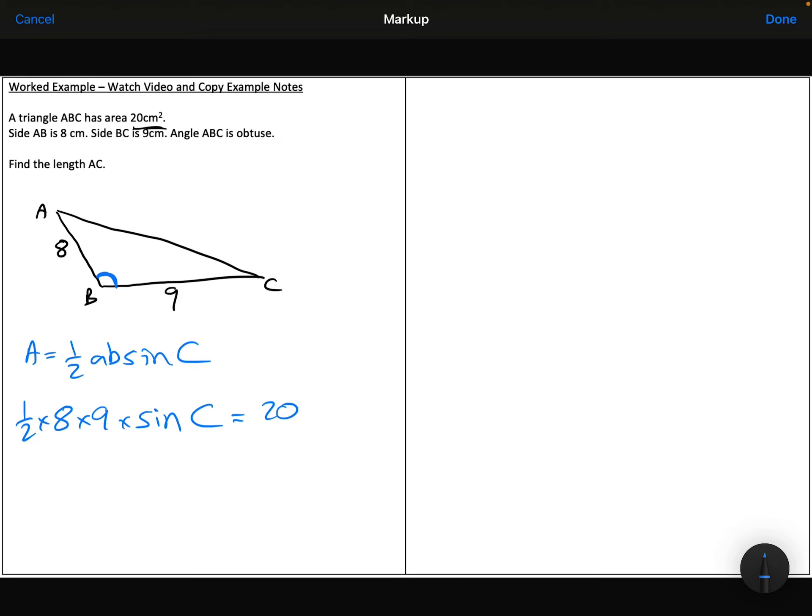So I can now times both sides by 2, divide both sides by the 8 times 9, so divide both sides by 72, and do sine inverse of 40 over 72. So sine inverse 40 over 72, and I get 33.75 degrees.